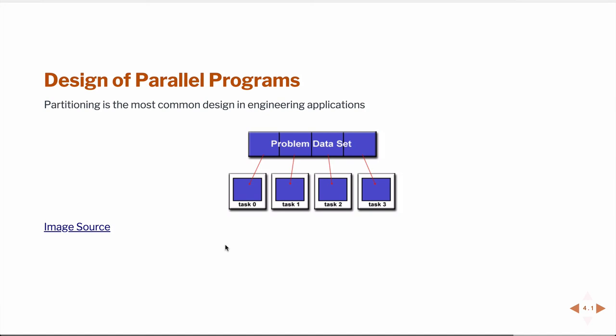There are several different ways to design parallel programs. The most common in engineering applications is to split the problem data set up. You'd have some large data set — such as a mesh for a finite element computation or a large data set for machine learning — and split that into individual tasks where the work will be performed individually. Often these tasks cannot be performed in isolation; when they can, that's called an embarrassingly parallel program. When they can't, there's communication amongst the tasks, and that's what we use MPI for.